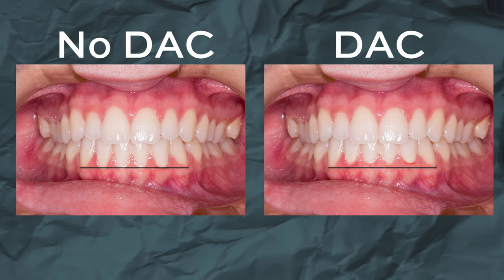Dental alveolar compensation is the process where alveolar bone remodels and elongates to compensate for the loss of vertical dimension. You can see this in the photos - on the left there is no dental alveolar compensation and the gingival margins of the lower incisors are in one straight line, while on the right the lower incisors are at a higher level compared to the canines due to dental alveolar compensation, with an increased width of the attached gingiva.